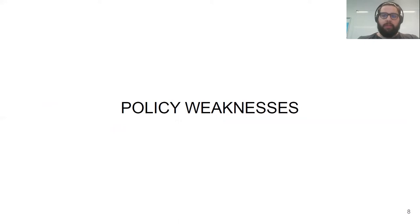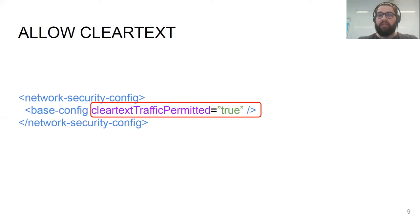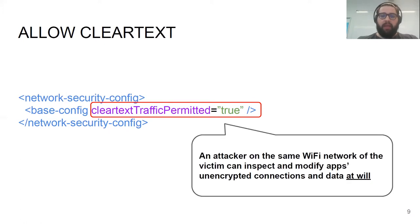As a first contribution of this paper, we identify several weaknesses that might affect a wrongly configured policy. The first one, probably the most obvious, is where we allow globally clear text connections for our application. This means that an attacker on the same Wi-Fi network as the victim can eavesdrop on and modify all the unencrypted connections.